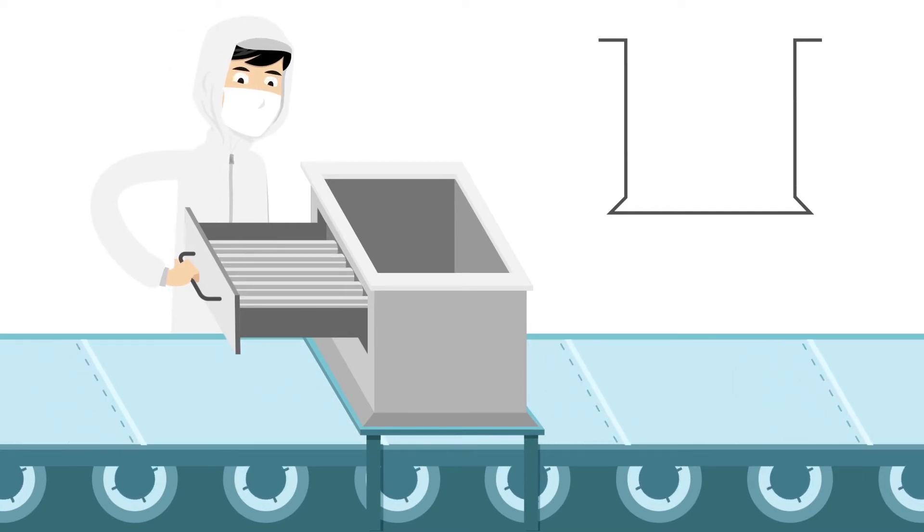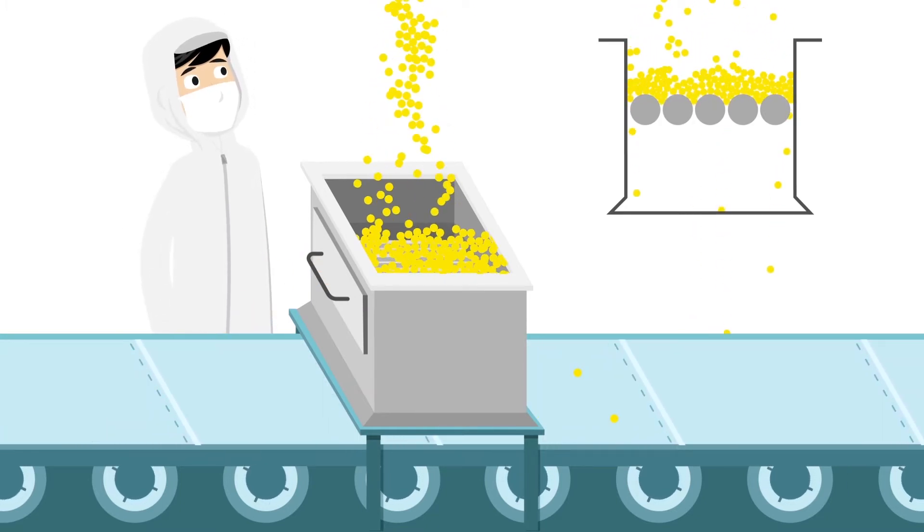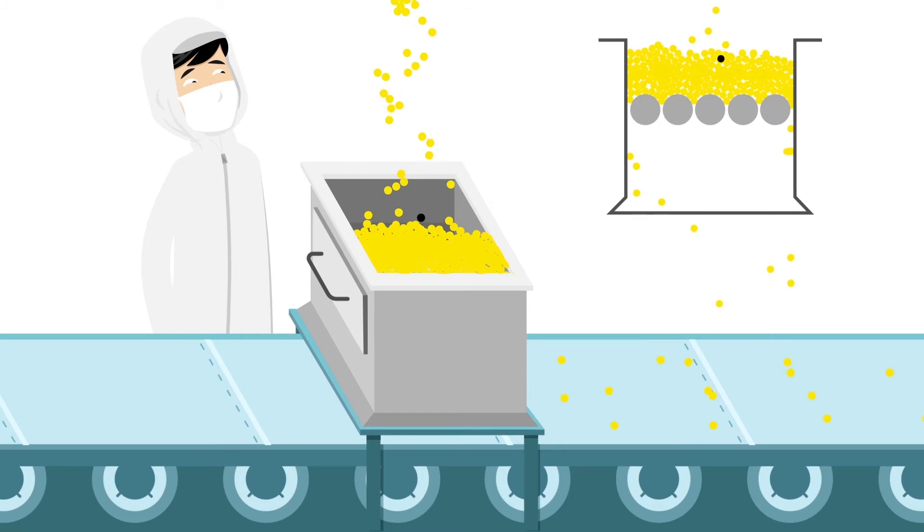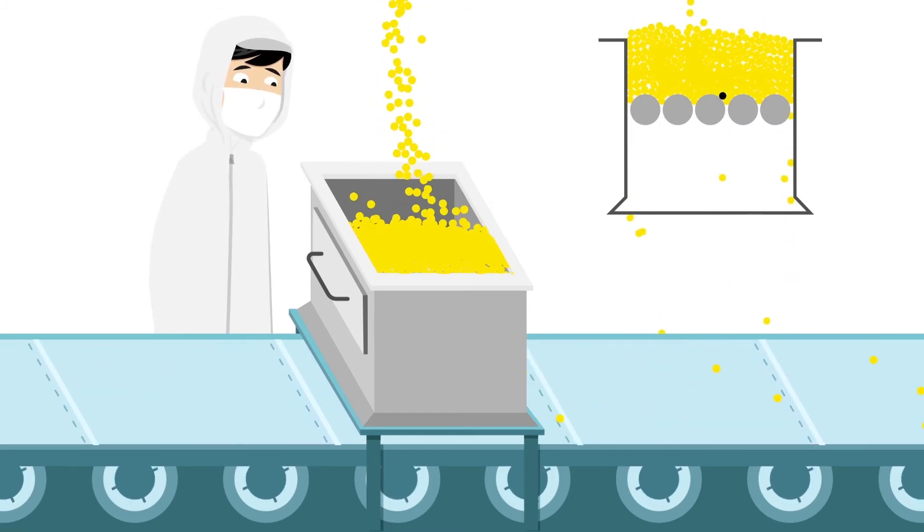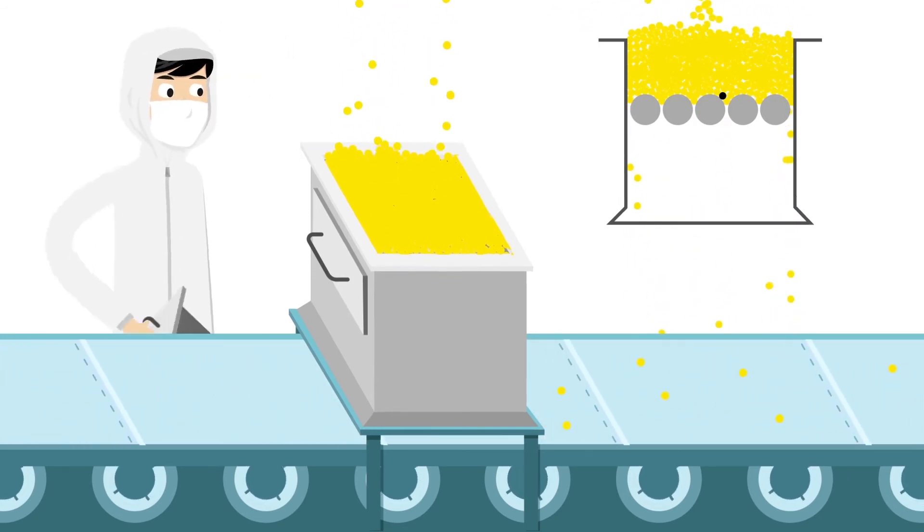This is remedied by increasing the number of bar magnets and strengthening their ability to remove foreign materials. However, an increased number of magnets means that there is less space between them, which might result in ingredients getting stuck or overflowing, thus lowering processing capacity.